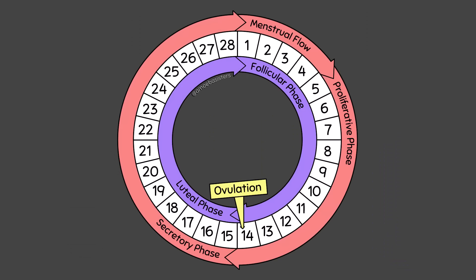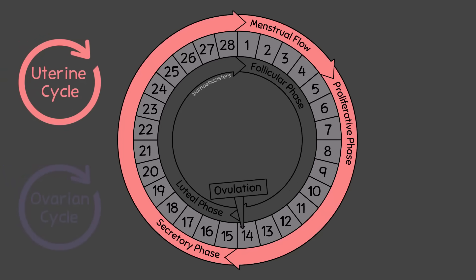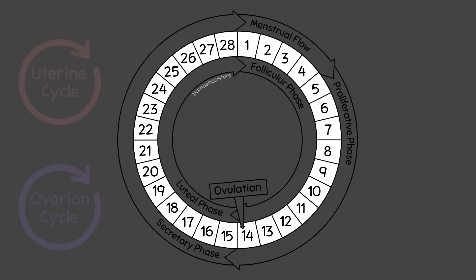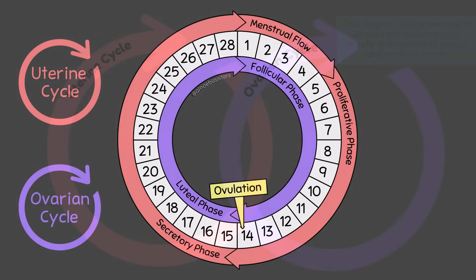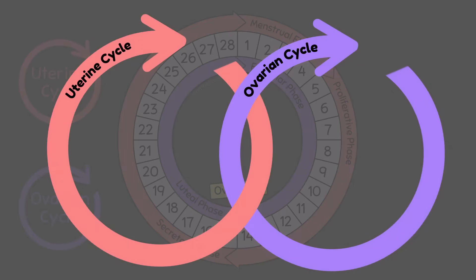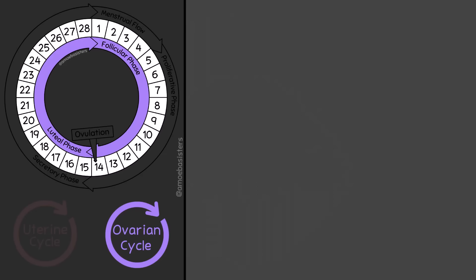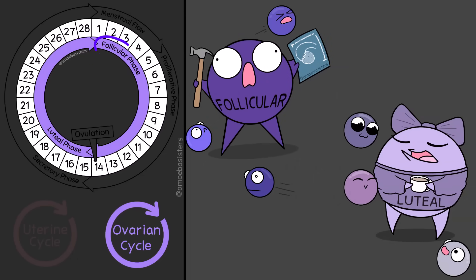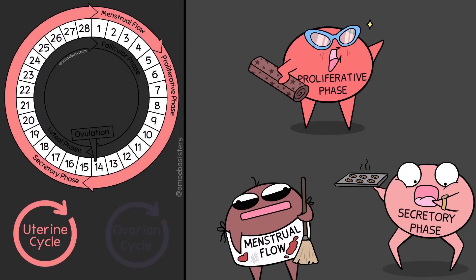Let's now circle through this diagram of the ovarian cycle and the uterine cycle phases. The uterine cycle is the outer ring, and the ovarian cycle is the inner ring. All of this is using an average 28-day cycle. This diagram emphasizes that both cycles are happening concurrently. The ovarian cycle includes two main phases: follicular phase and luteal phase. The uterine cycle includes three main phases: menstrual flow, proliferative phase, and secretory phase.